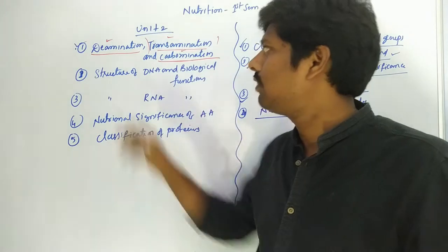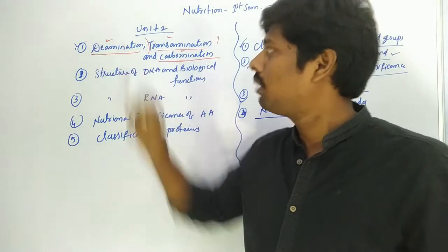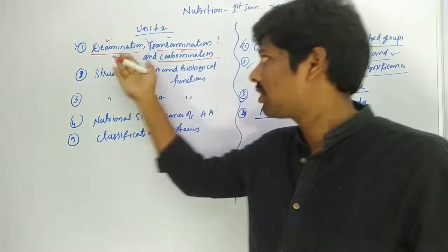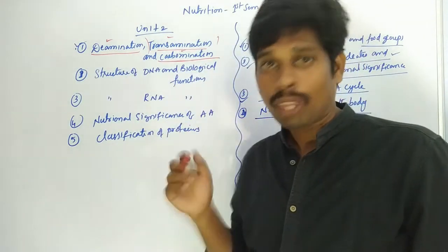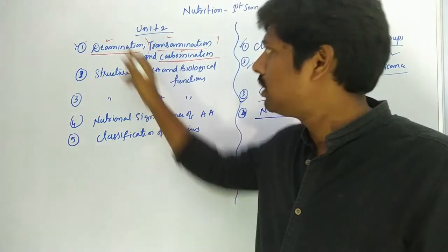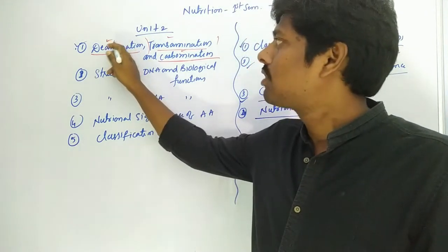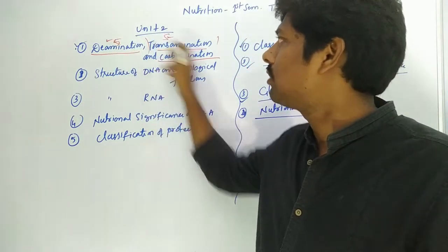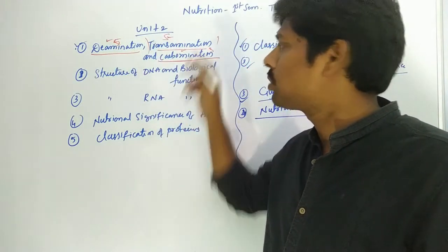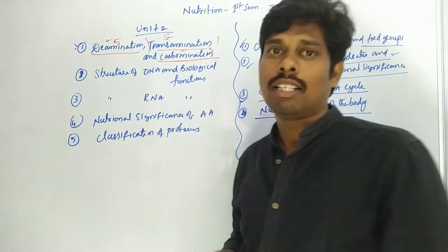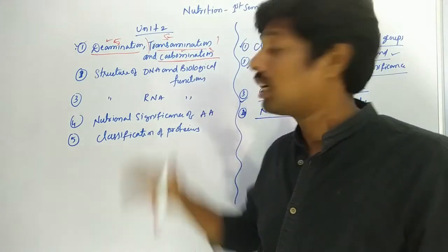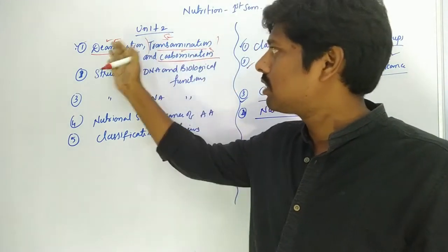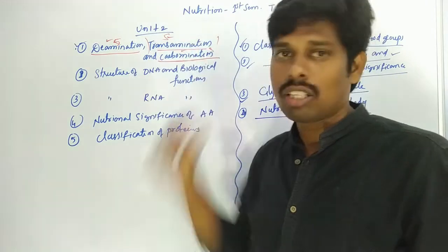Sometimes the answer is asked three times together, making it a long question. Each of deamination, transamination, and carbamination is a short answer on its own, but together they form a long answer.